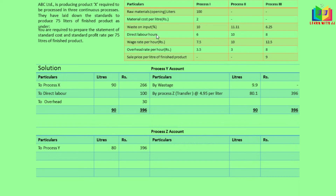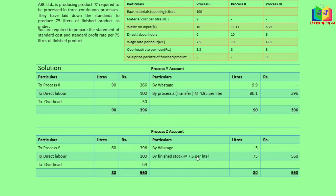In Process Z, labor hours are 8 at a wage rate of 12.5, so 8 into 12.5 equals 100. Overhead is 8 into 8 equals 64. Wastage is 6.25 percent on 80 liters, giving 5 liters with no scrap value. Balancing gives us 75 liters at a total cost of 560. The cost per liter is 560 divided by 75, which is 7.5 per liter.